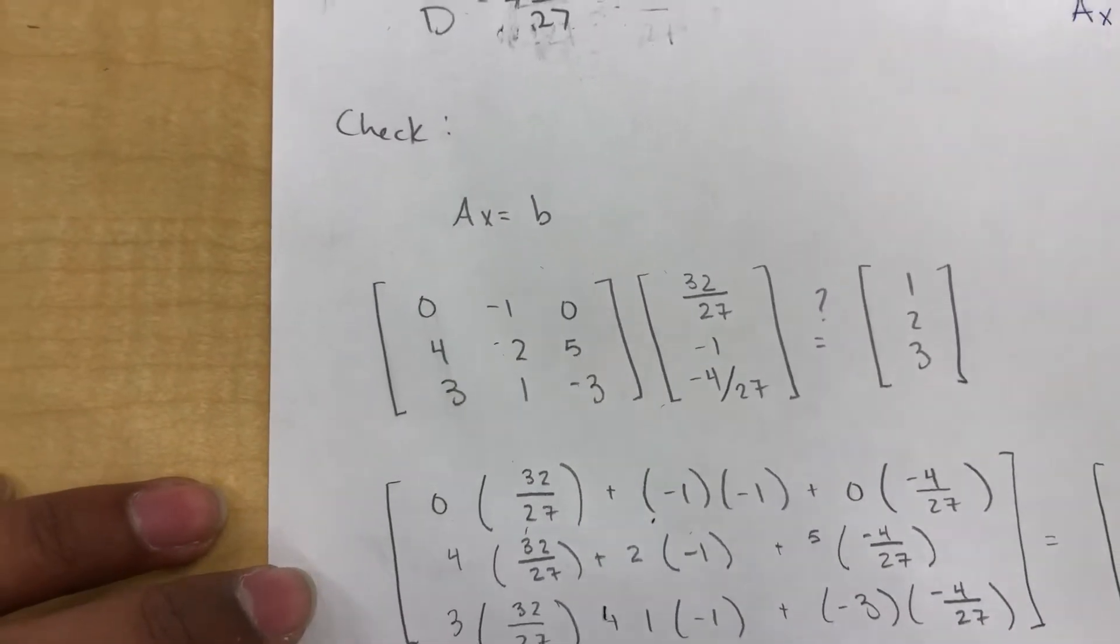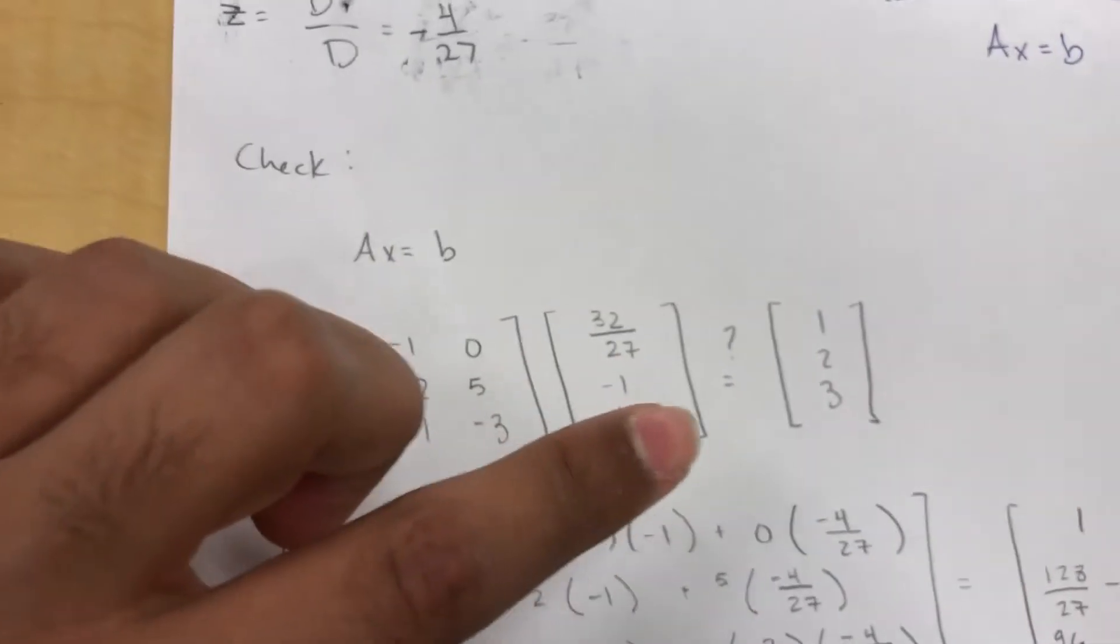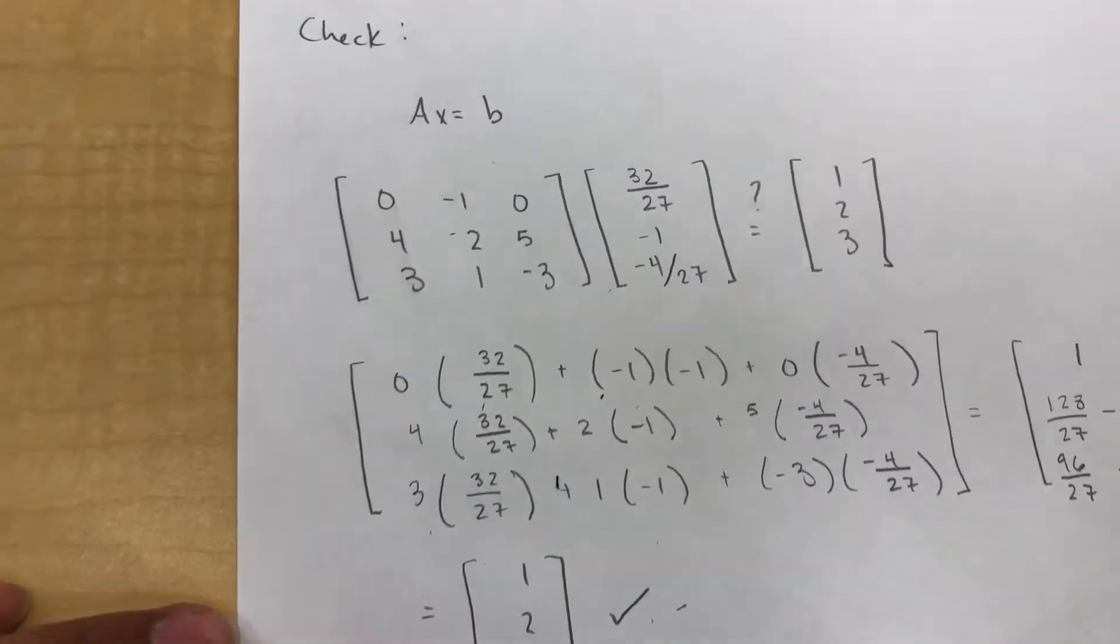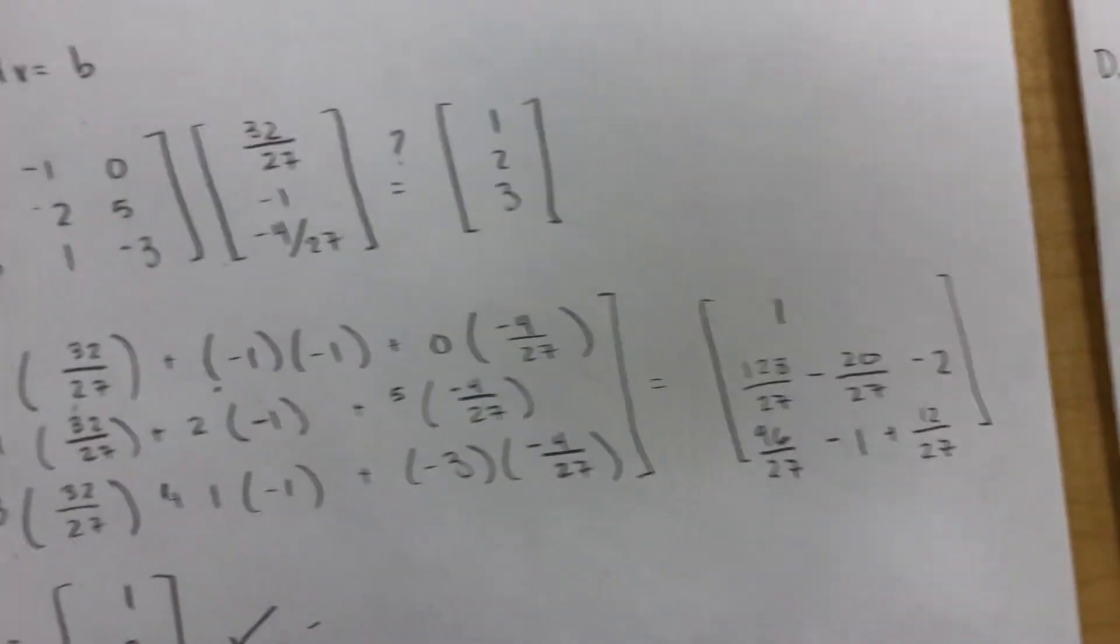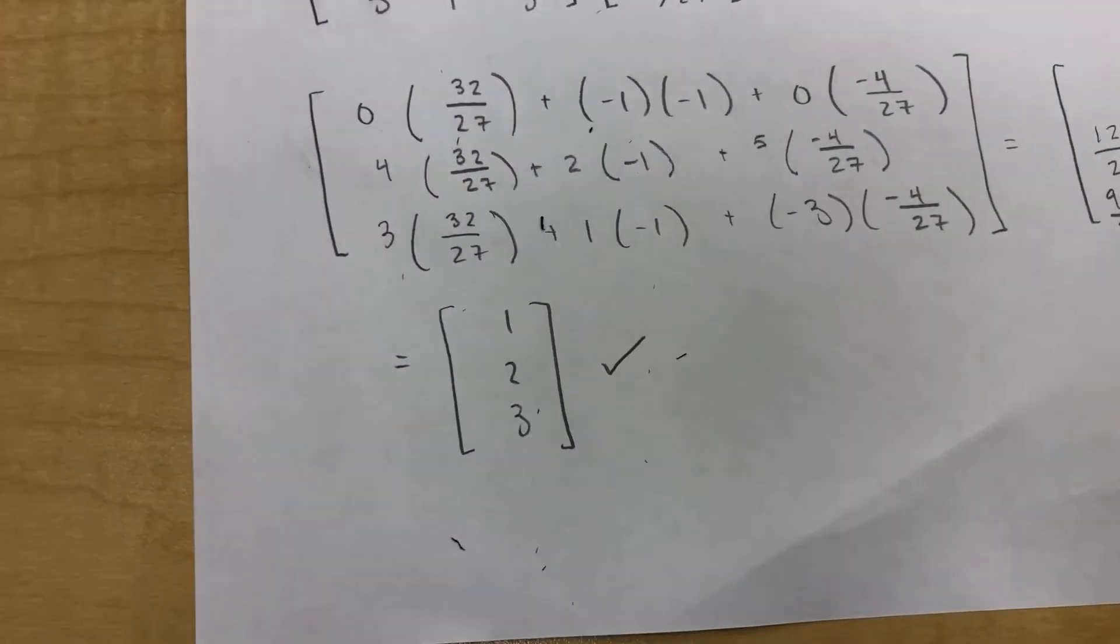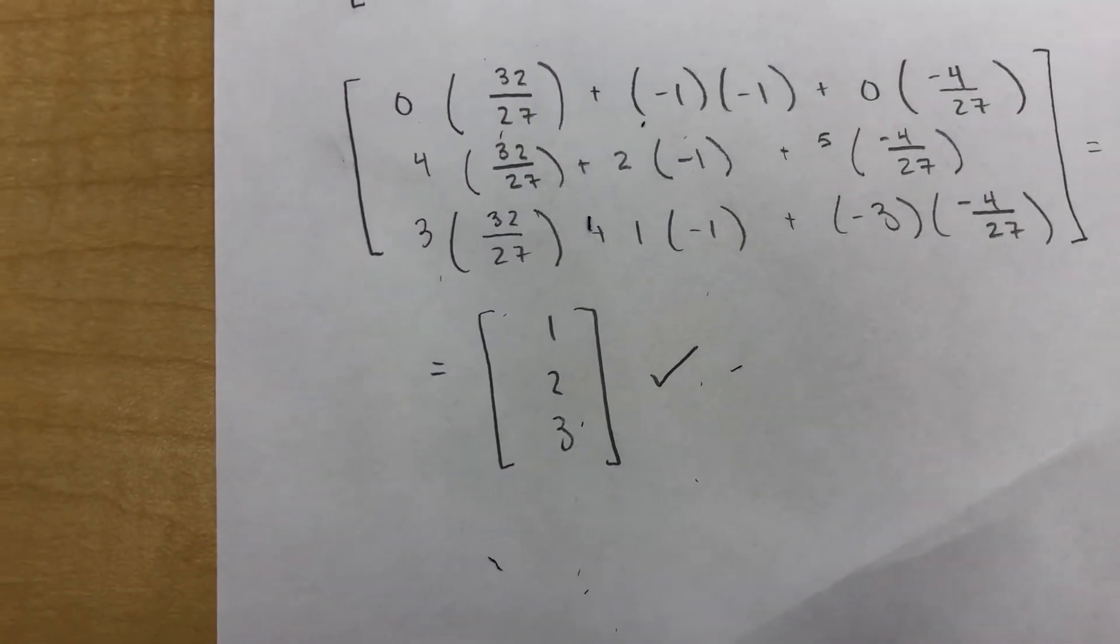And to check that AX does equal B, you do matrix multiplication. So we did the matrix multiplication, and once simplified, the final solution was B equals 1, 2, 3.